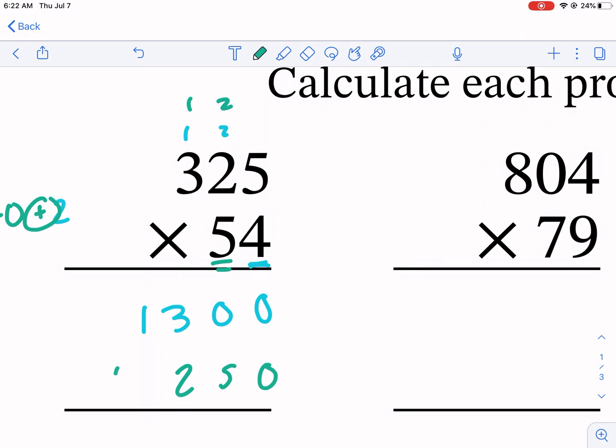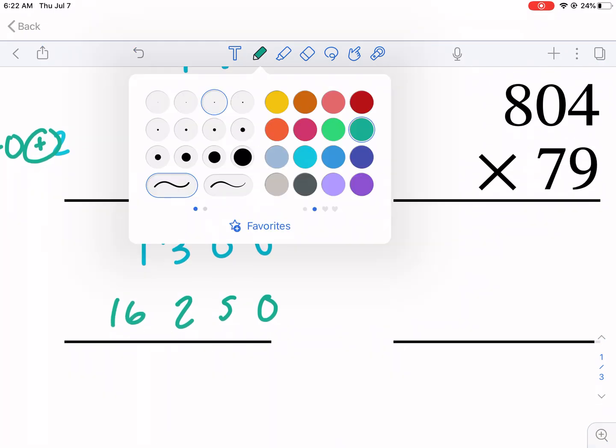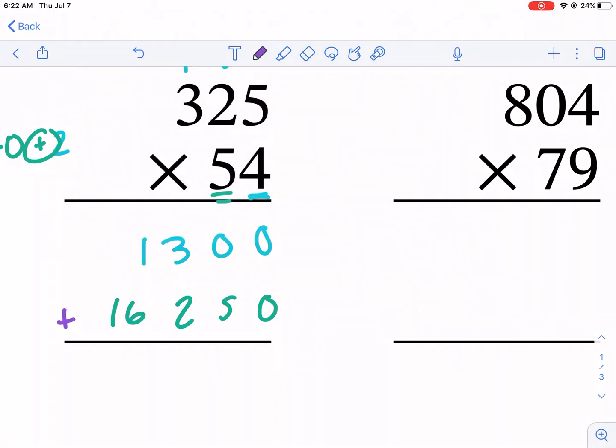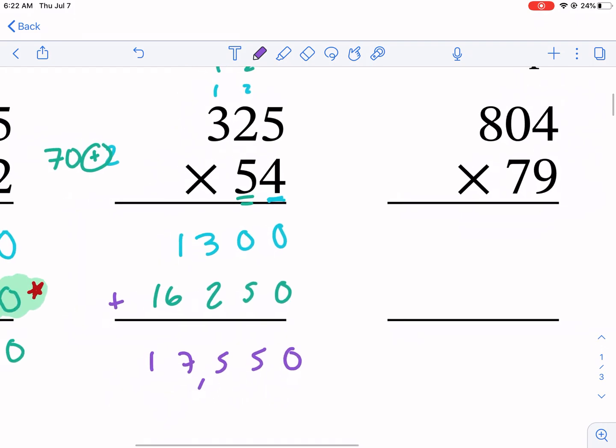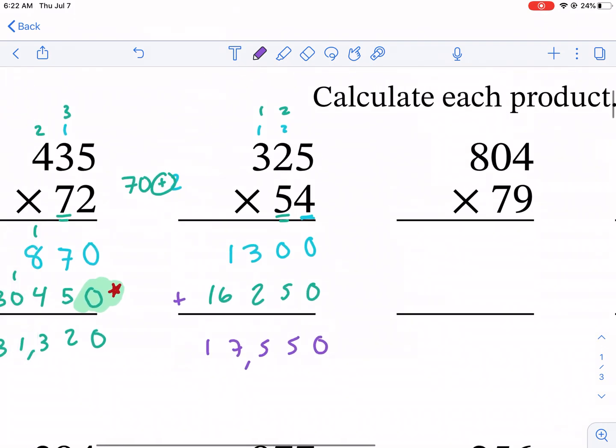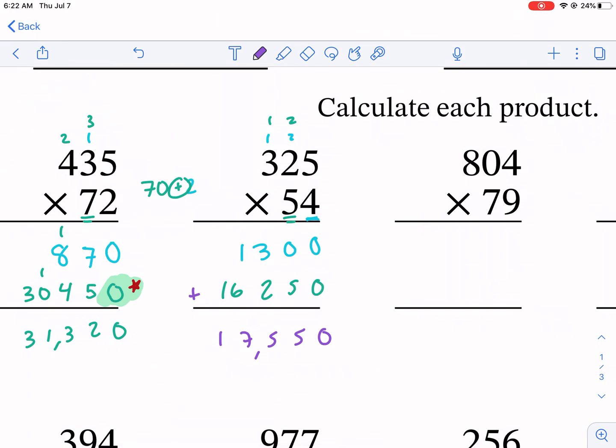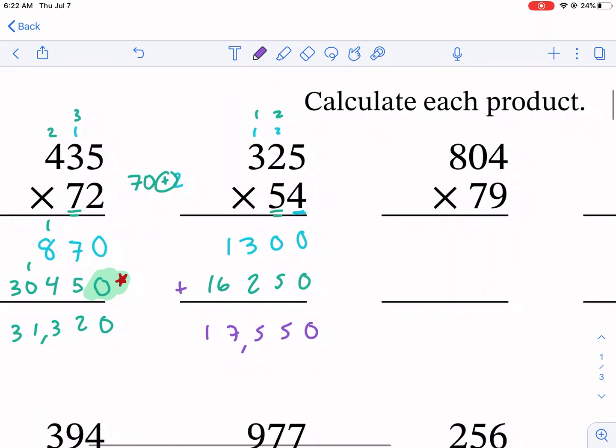And now we're just going to add the two numbers together. We have 0, 5, 5, 7, 1... 17,550 is our answer. So it's a pretty straightforward process. The main thing is we cannot forget that zero.